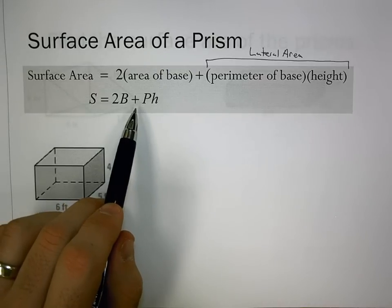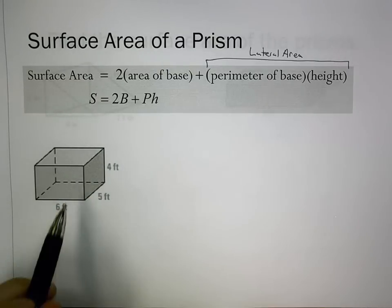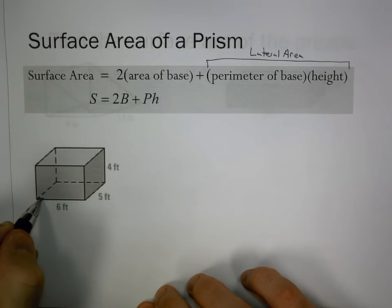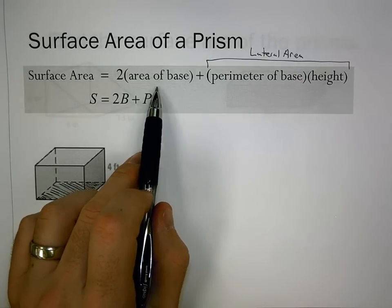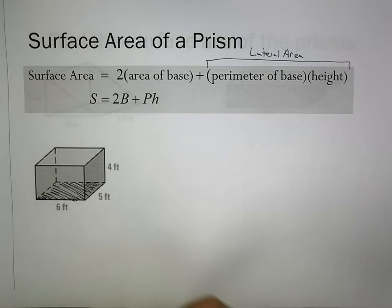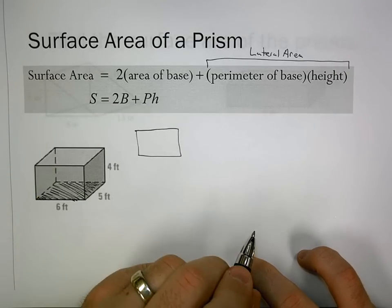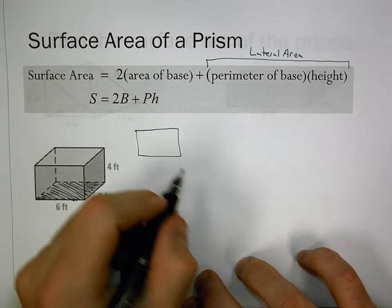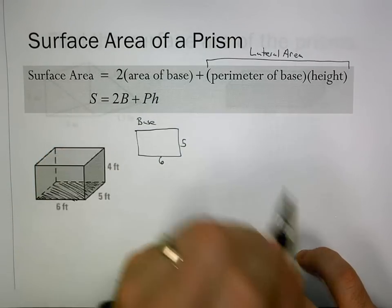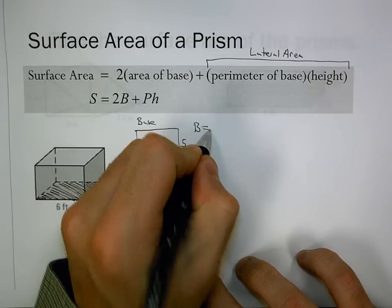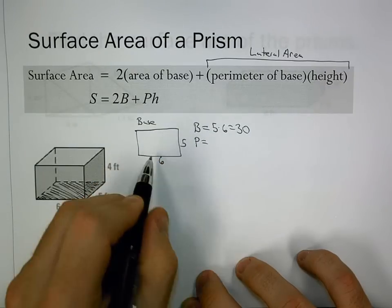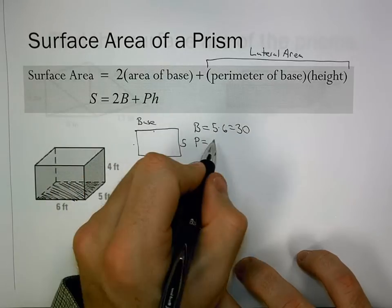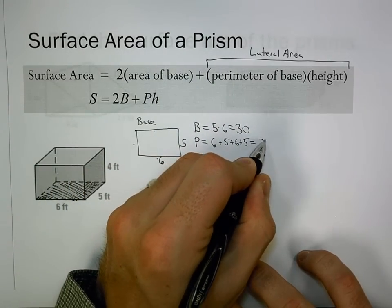S equals 2B plus Ph is the formula. For a rectangular prism, I can shade in this base here. It's good to draw the base off to the side the way we would look down on it. The base area is 5 times 6 or 30. The perimeter is 6 plus 5 plus 6 plus 5, which is 22.